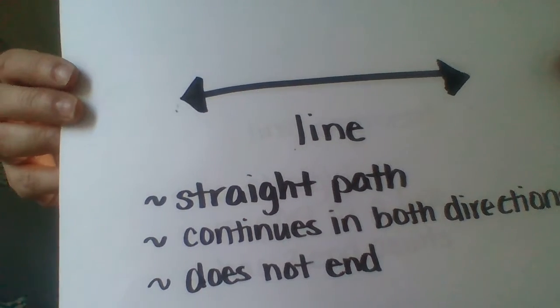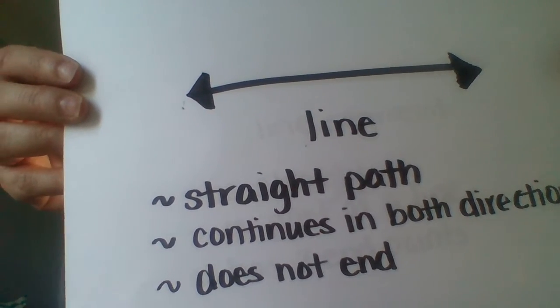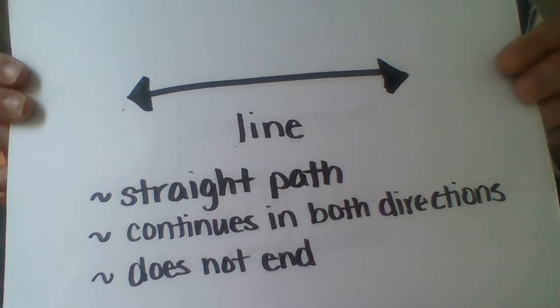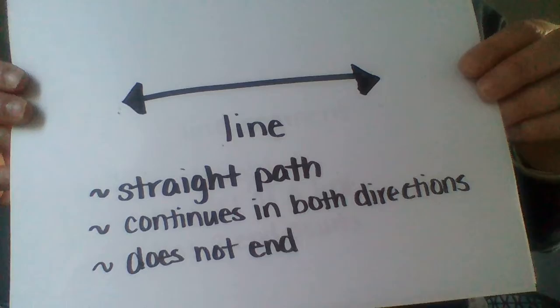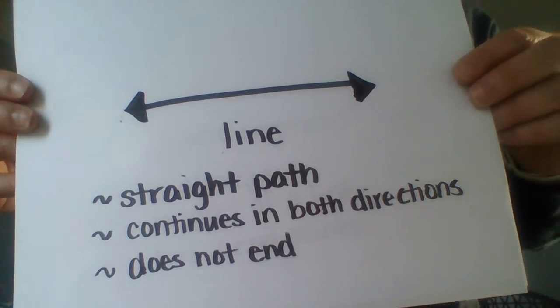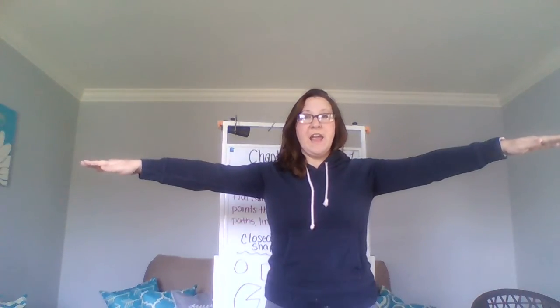The next one is a line. A line has a straight path, continues in both directions, and does not end. For our Simon Says game, both palms are open and out — it's a straight line that goes on and on forever.